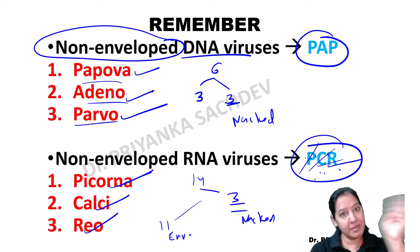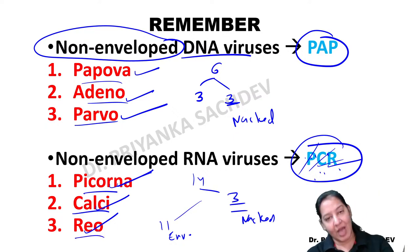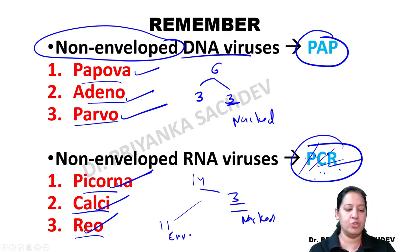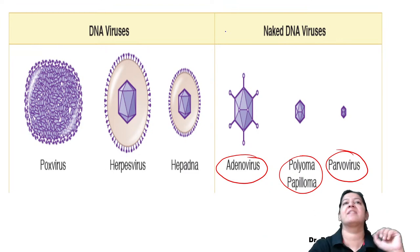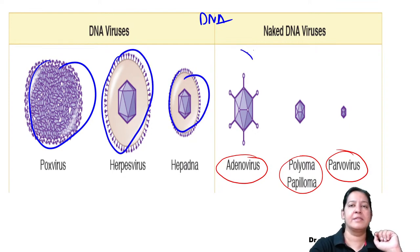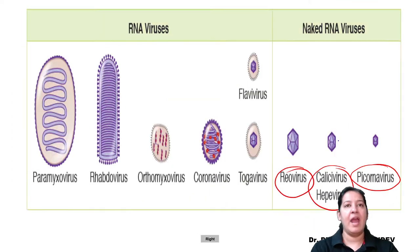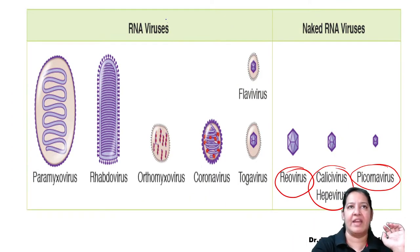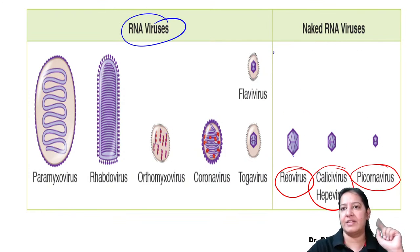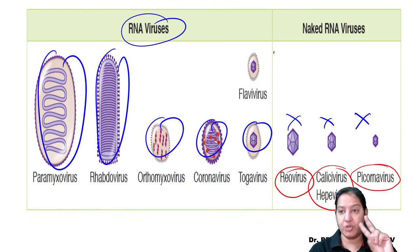Among the 14 RNA viruses, only 3 are non-enveloped (naked) and the remaining 11 are enveloped. The 3 naked RNA viruses have the mnemonic PCR: P is Picorna (not Paramyxo), C is Calci (not Corona), and R is Reo (not Rhabdo). There are 2P, 2C, and 2R in RNA viruses, so be careful to identify the correct one. Picorna, Calci, and Reo are naked; the remaining 11 RNA viruses are enveloped.